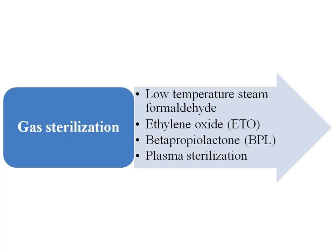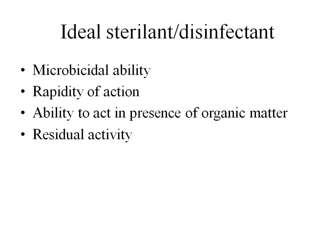All these sterilization processes I am going to explain in detail one by one in my future classes. Now let us see what should be the properties of an ideal sterilant or disinfectant. An ideal sterilant should have a microbicidal capacity — that is, the ability to kill all microorganisms. However, we do not have an ideal sterilant till now, because microbicidal activity means it should kill bacteria, viruses, fungi, parasites, and the most resistant form — prions. So there is no ideal sterilant which can kill or destroy all these microorganisms at one time.